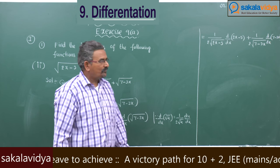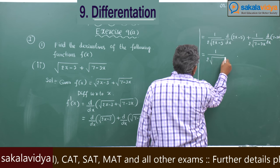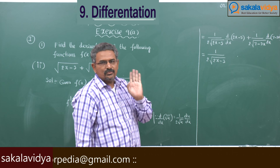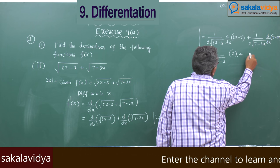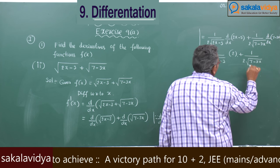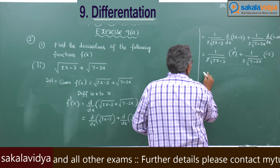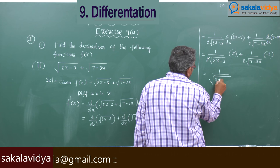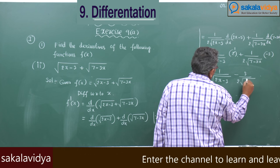Now this is 1 by 2 root(2x minus 3). The derivative of (2x minus 3) is 2. So the 2 and 2 get cancelled, giving 1 by root(2x minus 3) minus 3 by 2 root(7 minus 3x).